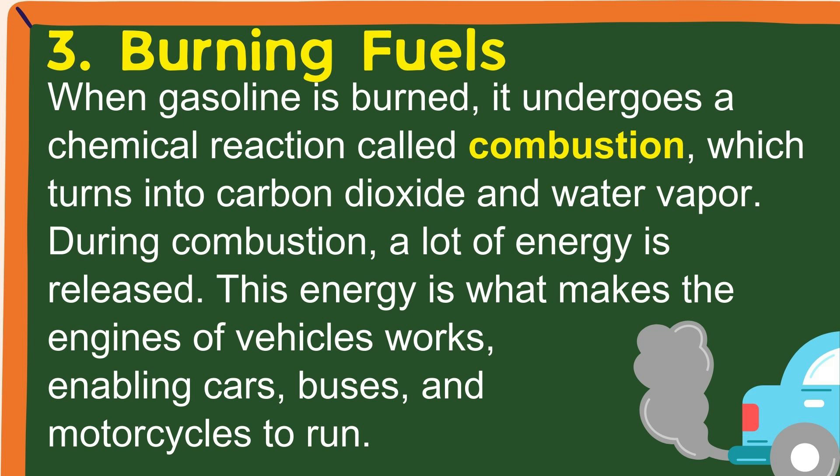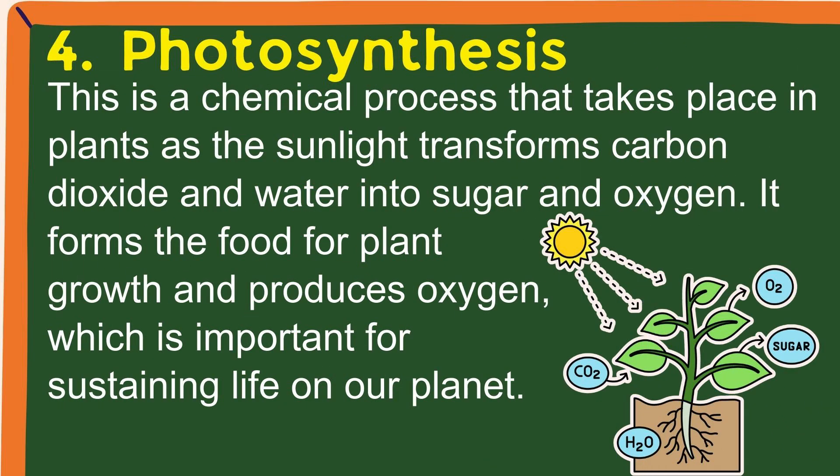During combustion, a lot of energy is released. This energy is what makes the engines of vehicles work, enabling cars, buses, and motorcycles to run. 4. Photosynthesis — this is a chemical process that takes place in plants as sunlight transforms carbon dioxide and water into sugar and oxygen. It forms food for plant growth and produces oxygen, which is important for sustaining life on our planet.